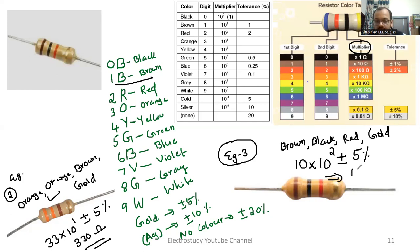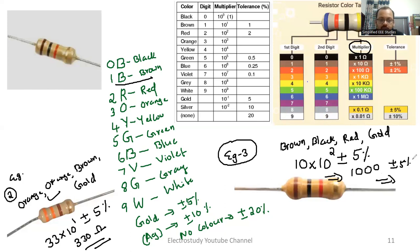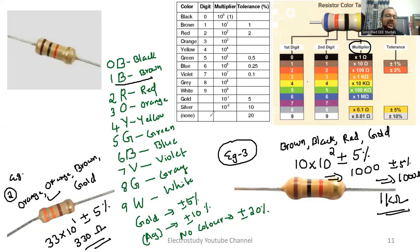So 10 into 10 to the power 2 — 10 to the power 2 is 100 — giving 1000 ohm, plus or minus 5%. This is 1 kilo ohm. This is the same as Example 1, solved here for revision purposes. I think it's clear to everyone.